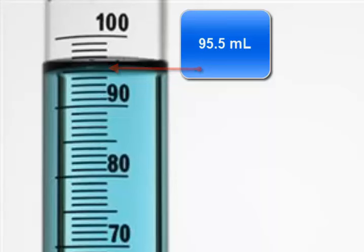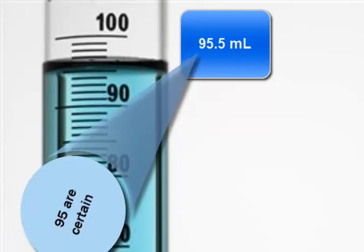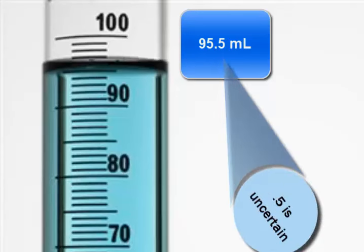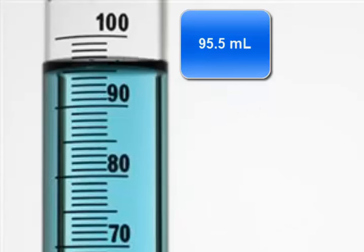Now, the nine and the five would be considered certain digits because we are certain that the volume is above the 95. The .5 in the measurement, on the other hand, is considered an uncertain digit or an estimate and may depend on who is doing the measurement.